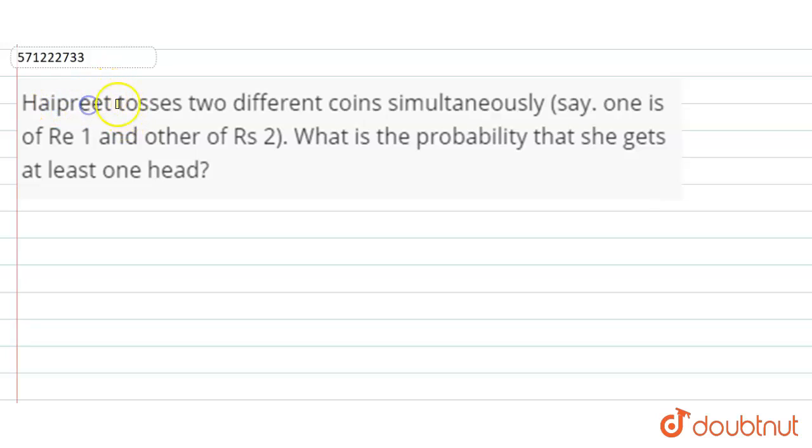Haipreet tosses two different coins simultaneously, say one is of Re 1 and another of Rs 2. What is the probability that she gets at least one head?